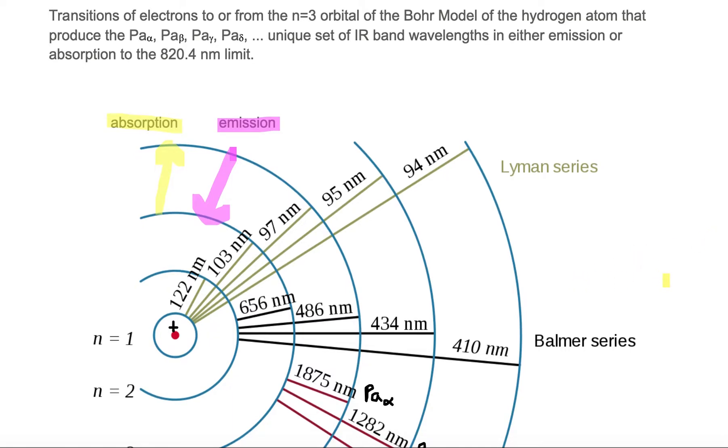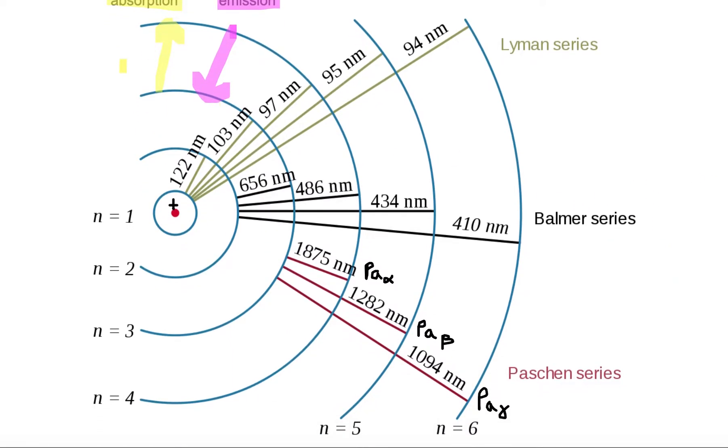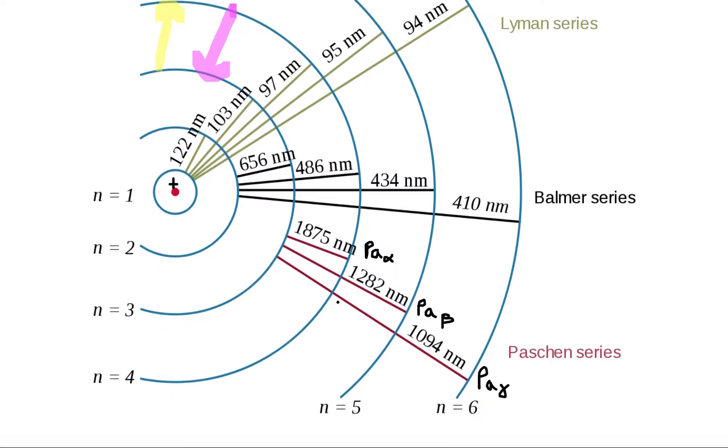Let's look at the series, the Paschen series, and look at some examples. If an electron were located in the n equals 4 orbital and would make a transition downward to the n equals 3 orbital, the electron would emit a photon that would have an exact wavelength of 1875 nanometers called the Paschen alpha line.